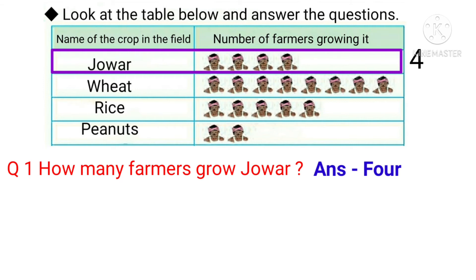Looking at the jowar column again, we can see 1, 2, 3 and 4 — 4 farmers grow jowar. So the answer is 4.